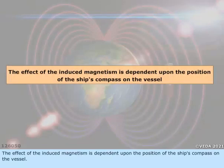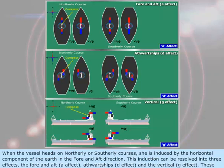The effect of induced magnetism is dependent upon the position of the ship's compass on the vessel. When the vessel heads on northerly or southerly courses, she is induced by the horizontal component of the Earth in the fore and aft direction.